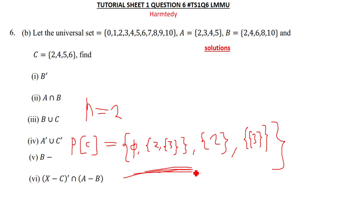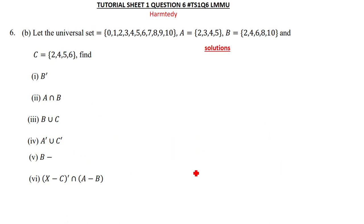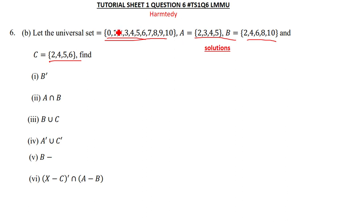Thank you for watching. I didn't see it — there's also a part b, so let's solve question 6b. It says: let the universal set be defined, and A, B, and C are given subsets. To find B complement, we list whatever is in the universal set but not in B — meaning we just list the odd numbers.